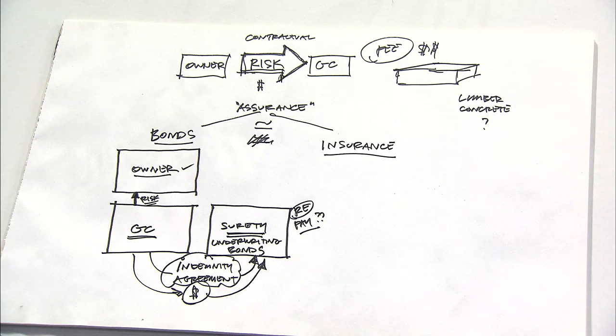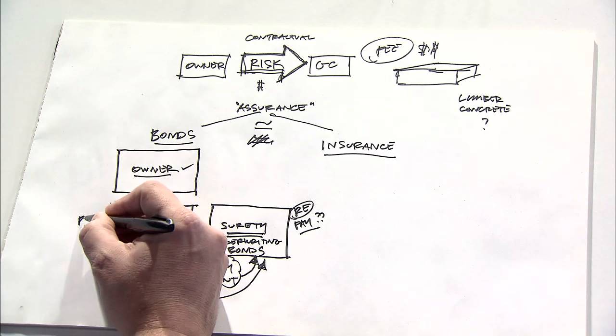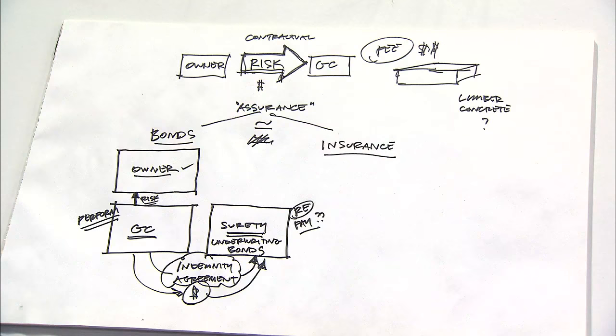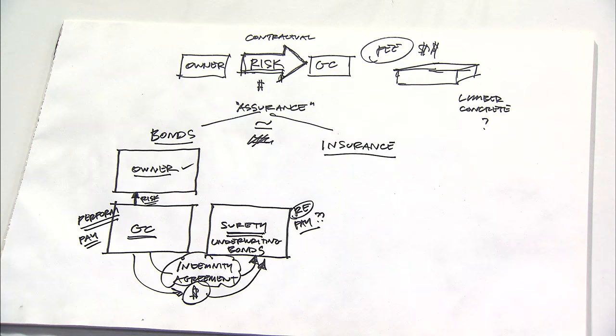And many times, the owner says there are two fundamental types. One is that the contractor must perform the work satisfactorily. And second is that the contractor must make payments to material men, suppliers, and subcontractors, and so forth.